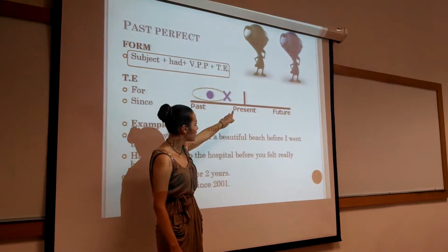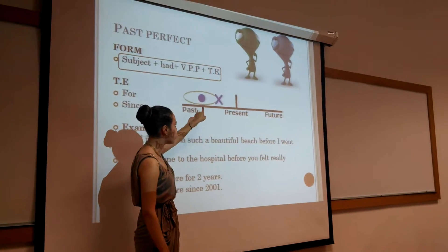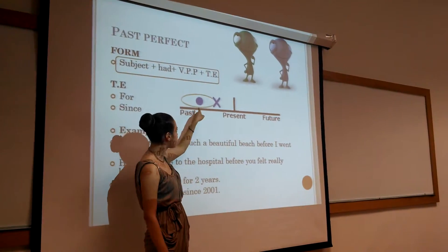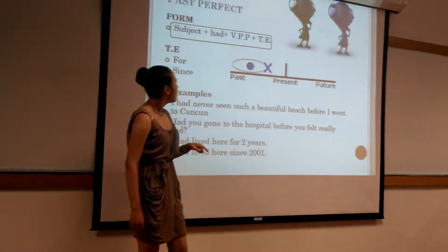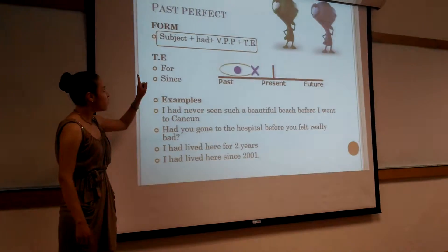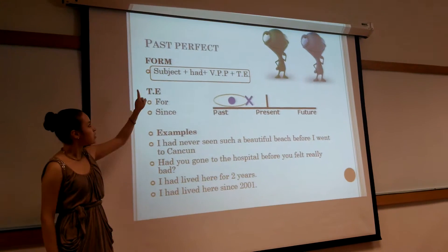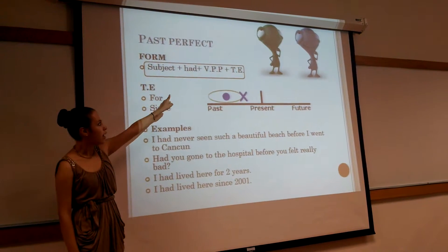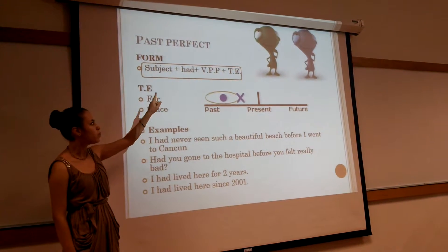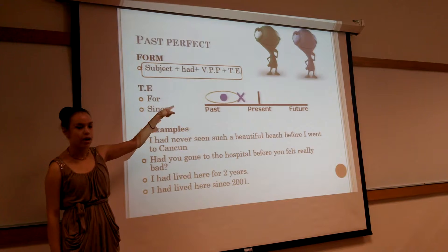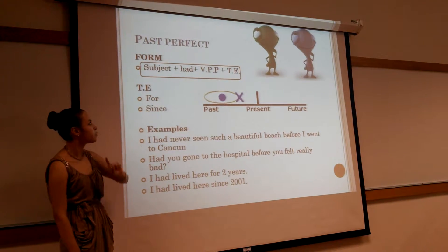You can see here is the present and here are both options that occur in the past. So the formula is the subject plus the auxiliary plus the past participle plus the time expression.